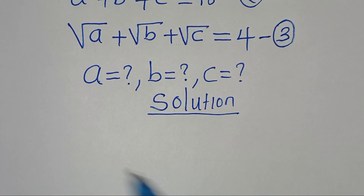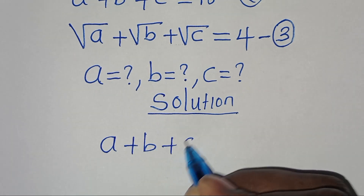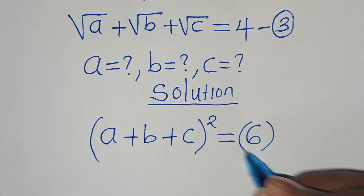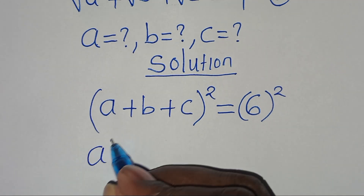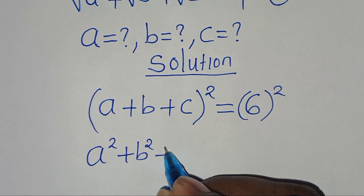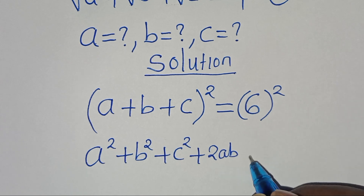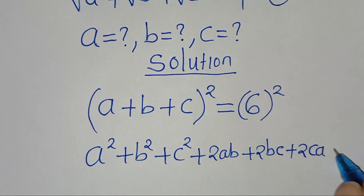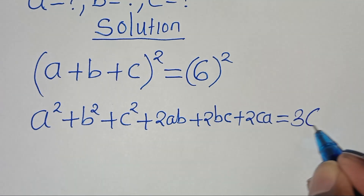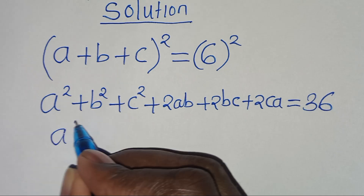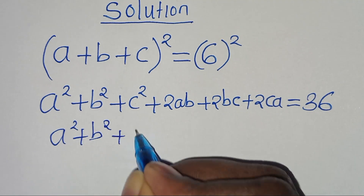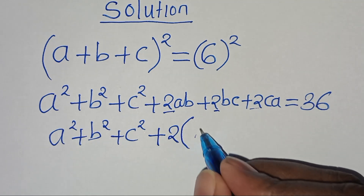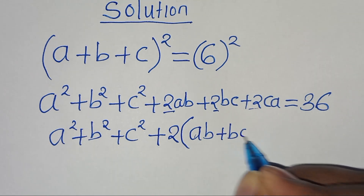From equation 1, a + b + c = 6, let's square both sides. This gives a² + b² + c² + 2ab + 2bc + 2ca = 36. We can factor out 2 from the cross terms: a² + b² + c² + 2(ab + bc + ca) = 36.